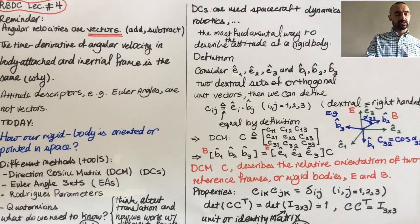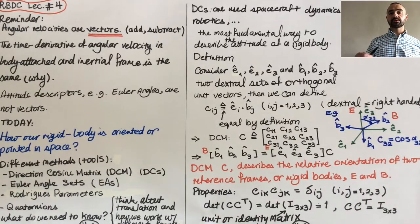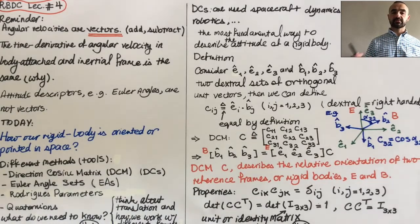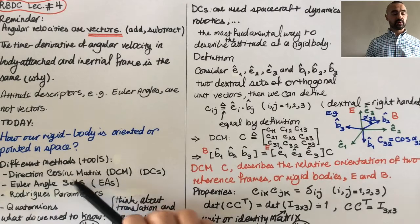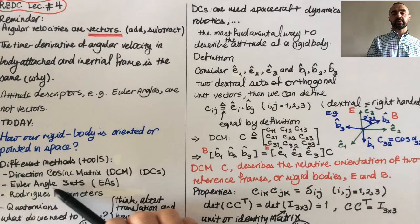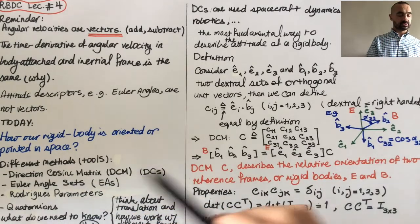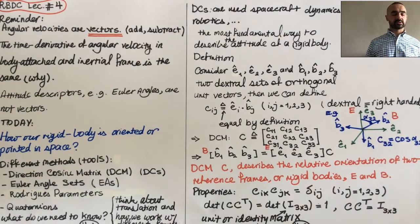Now let's talk about attitude description. Attitude description is essentially the basis for rigid body dynamics. There are different ways we describe the attitude of a rigid body: we have direction cosine matrix or DCM, Euler angle sets, then we have quaternions, Rodriguez parameters, and we're going to talk about these one by one.